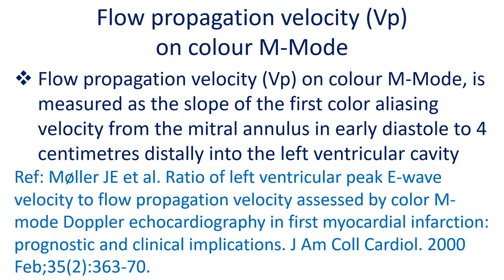Flow propagation velocity Vp on color M-mode is measured as the slope of the first color aliasing velocity from the mitral annular E in early diastole to 4 cm distally into the left ventricular cavity.